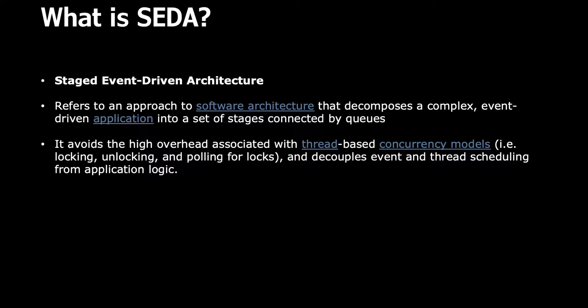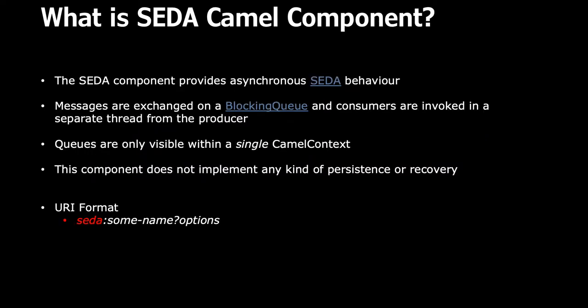The SEDA Camel component provides asynchronous SEDA behavior. Messages are exchanged on a blocking queue and consumers are invoked in a separate thread from the producer. What this simply means is: if you have a route, it will not block the processing of that route, because you can basically break your route and take half of the load and put it into an asynchronous queue.